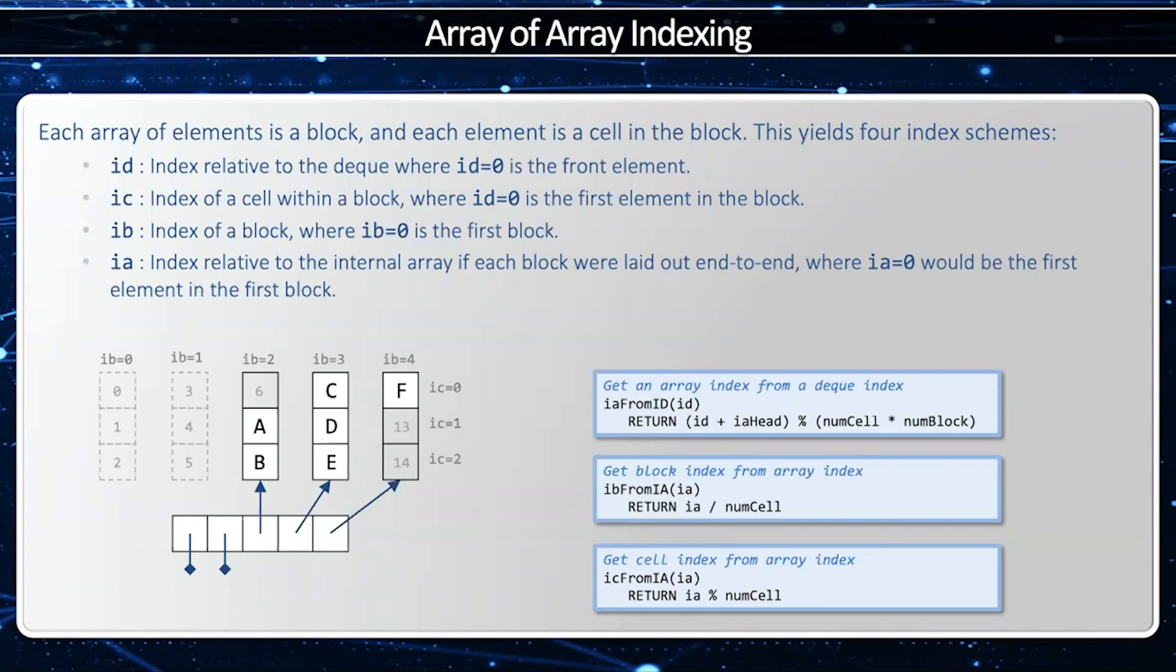Now the deque index is what the user sees. So if I have seven elements in my deque, I'm going to have the deque index 0 through 6, where deque index 0 is the front element. The wrapping array deques will have several blocks. Each block will have a fixed number of cells. That's the cell size or num cells.